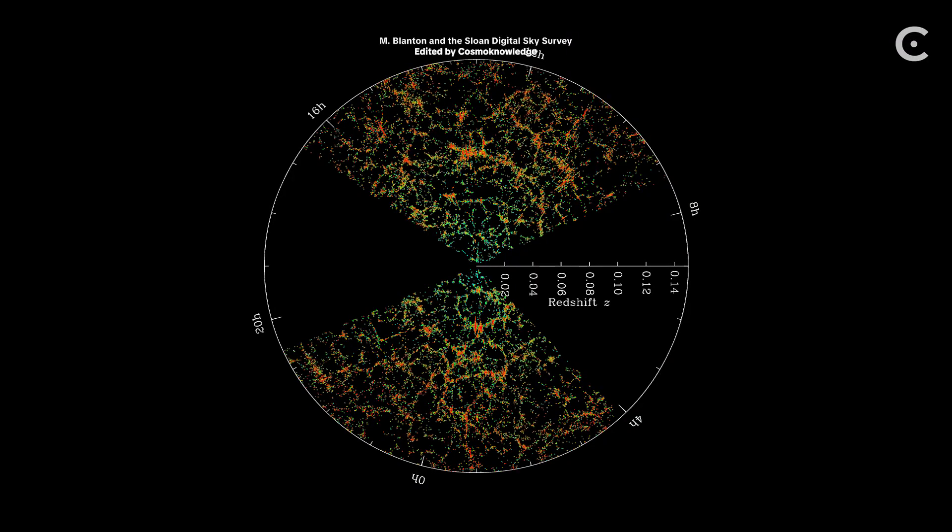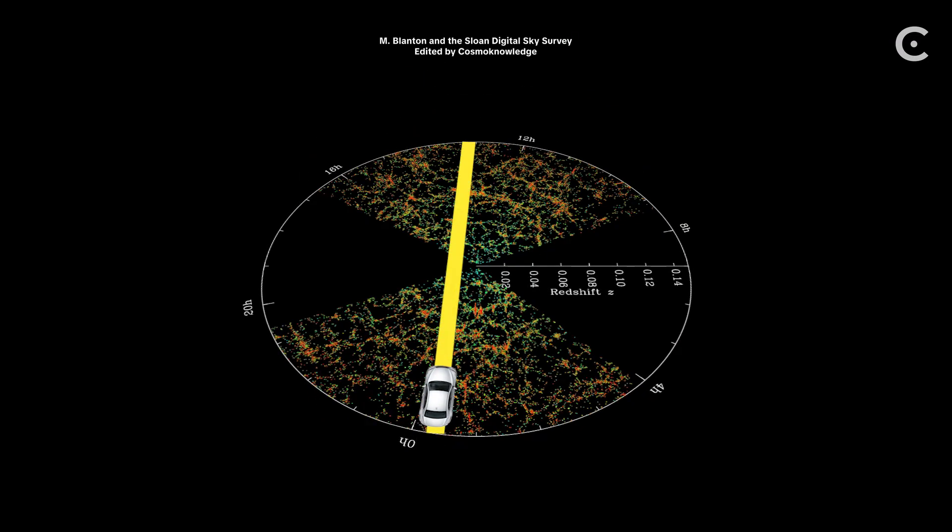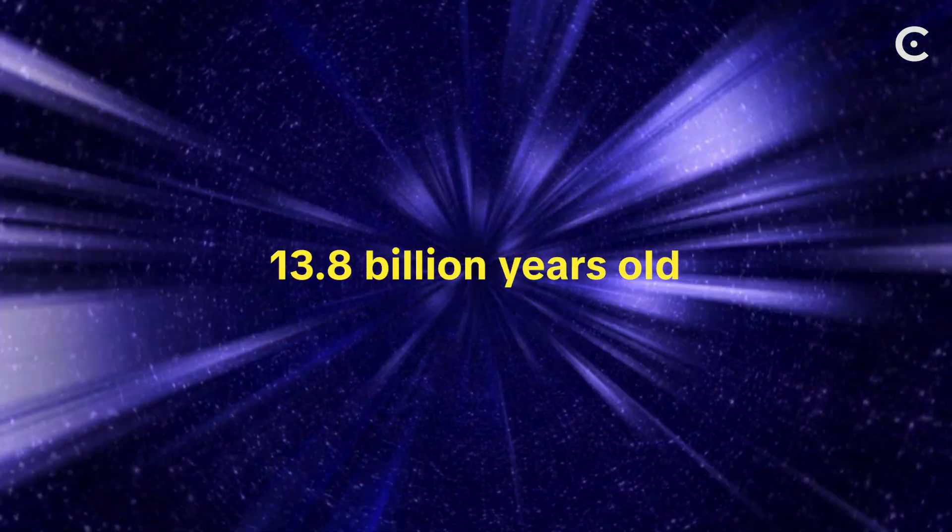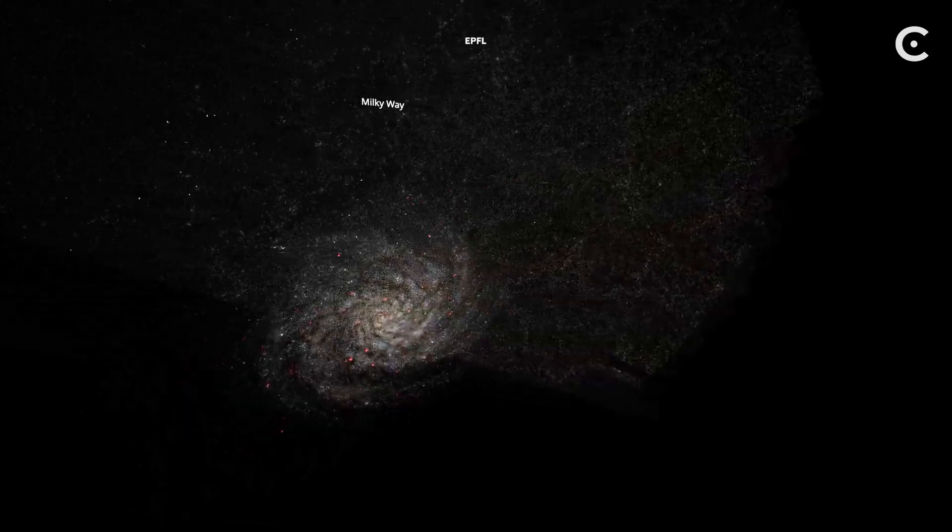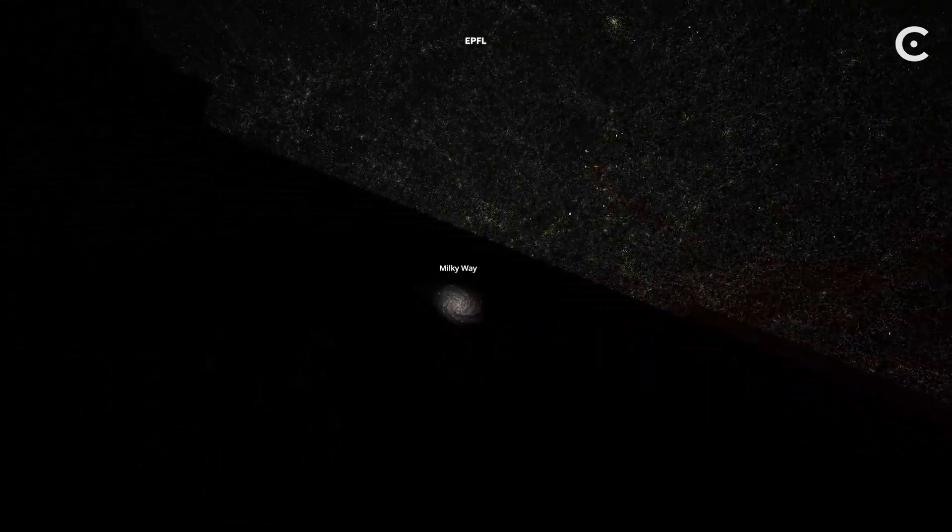Picture this. If you laid the Sloan Great Wall flat and tried to drive across it at highway speed, 70 miles per hour, non-stop, it would take you about 20 quintillion years. The universe itself is only 13.8 billion years old.